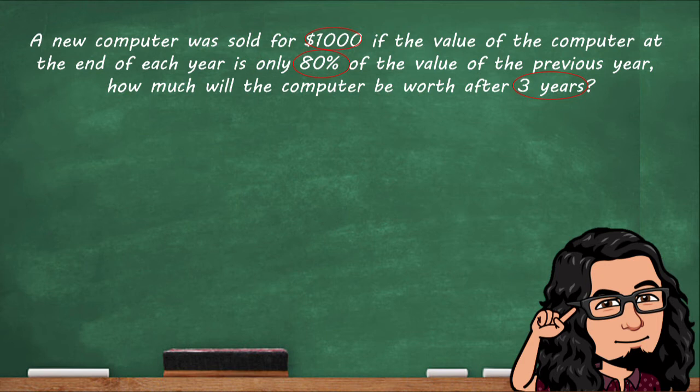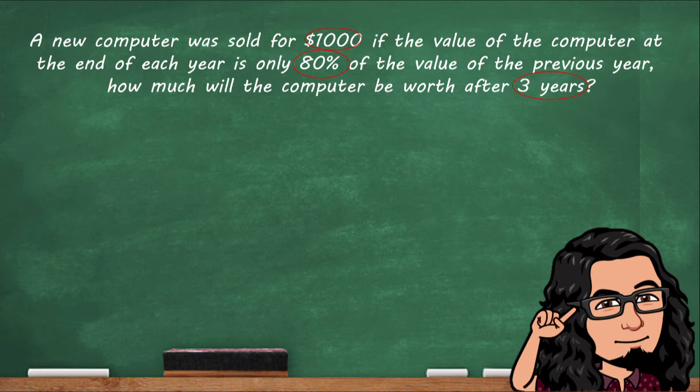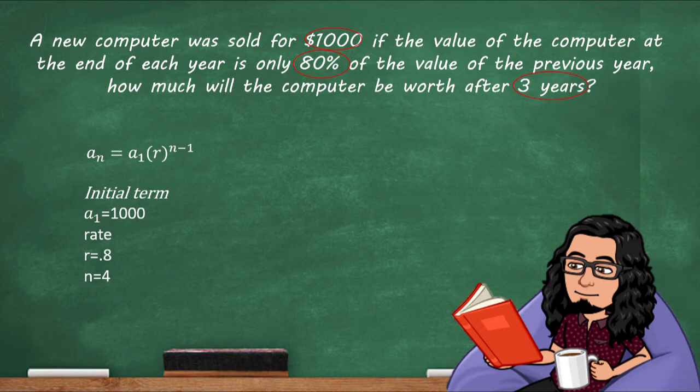Because we know that the value of the computer is gonna be changing because of our rate, we can assume that this is gonna be a geometric problem. Here is our formula for that. Our initial term a sub 1 equals a thousand dollars. Our rate 0.8 or 80 percent, and our last term n is gonna be equal to 4, and I'm gonna explain that at the end.